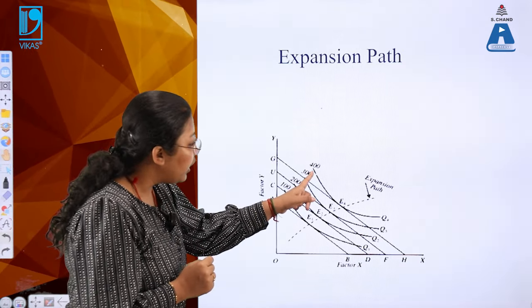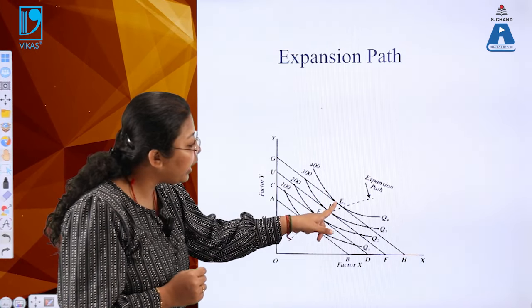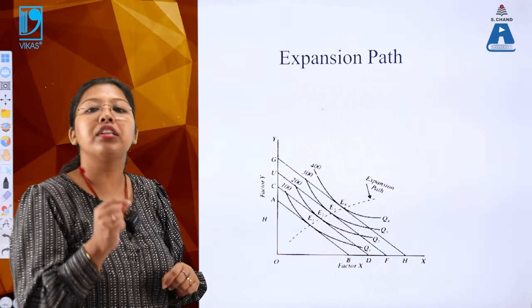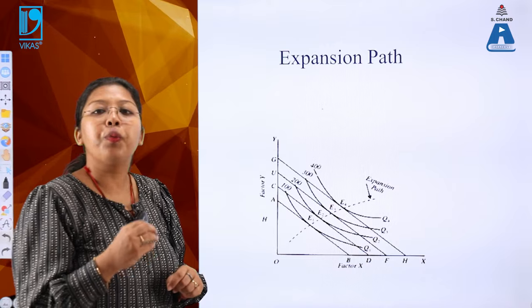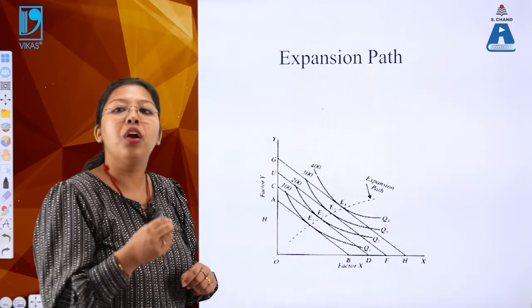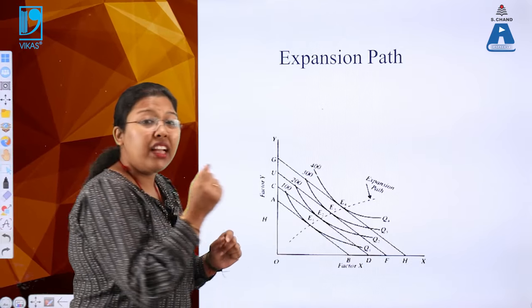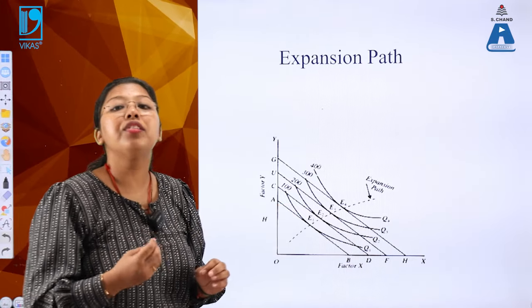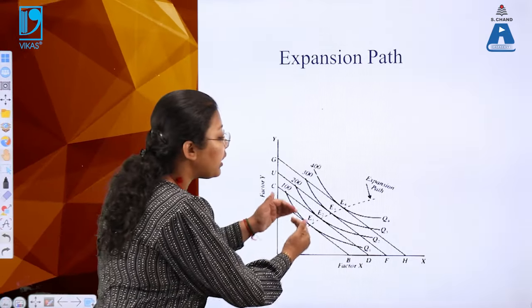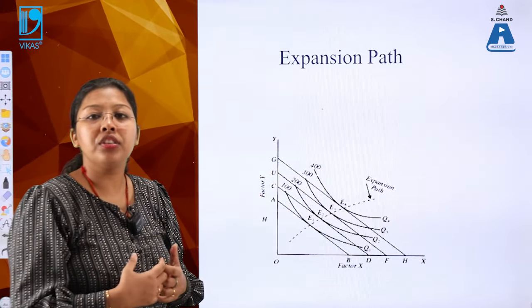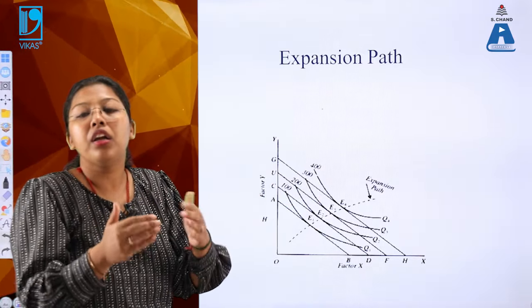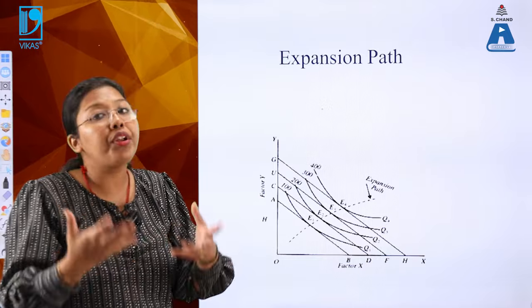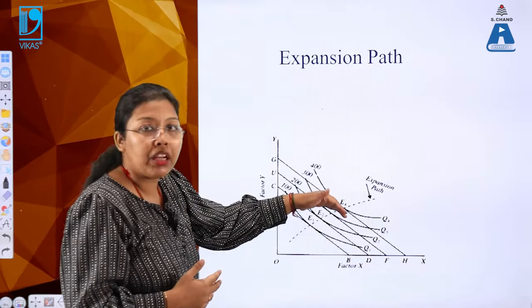We can easily see that where the isocost and isoquant curves intersect, there are certain intersection points - these are the equilibrium points of the producer. The concept is that we need to connect these equilibrium points. The reason is that the budget keeps increasing, and so does production. When my budget increases, I increase production. Increased production leads to more profits, and more profits mean more investment.